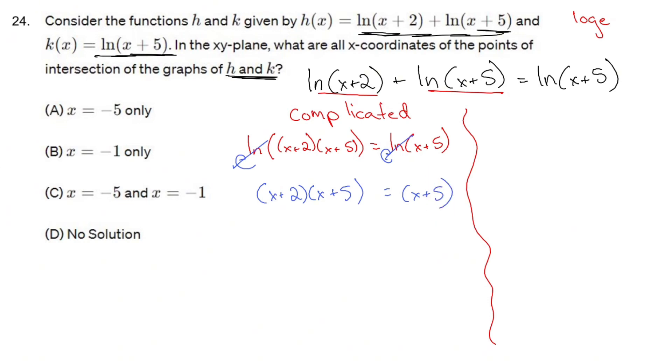So this is a FOIL problem. FOIL that out: x squared plus 5x plus 2x plus 10 equals x plus 5. X squared plus 7x plus 10 equals x plus 5. Subtract x and subtract 5. X squared plus 6x plus 5 equals 0.